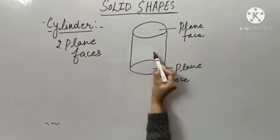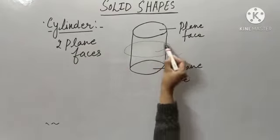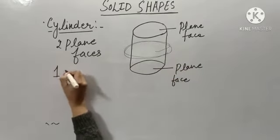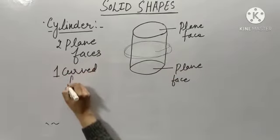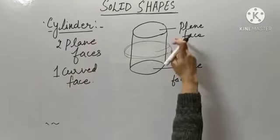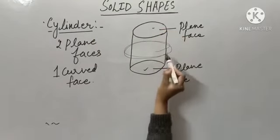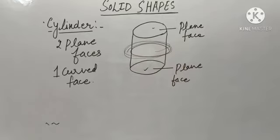And this is my curved face. That means, it has one curved face. So, cylinder has two plane faces — this one and this one — and this is the curved face of the cylinder.